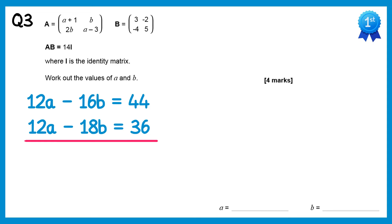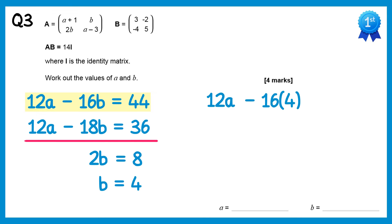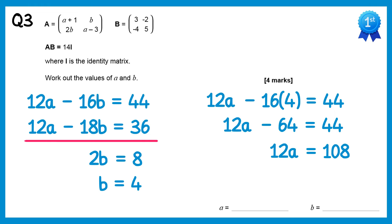Subtracting the equations: 12a take 12a is 0, negative 16b take negative 18b is 2b — remember when you take away a negative you add — and 44 take 36 is 8. Dividing both sides by 2 gives b equals 4. Substituting back into the first equation: 12a take 16 times 4 equals 44, so 12a take 64 equals 44. Adding 64 to both sides gives 12a equals 108, and dividing by 12 gives a equals 9. So the answers are a equals 9 and b equals 4.